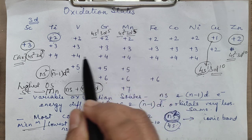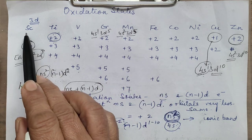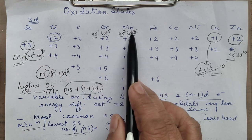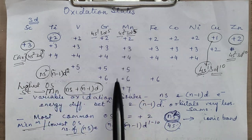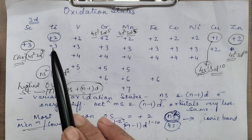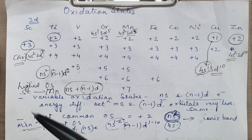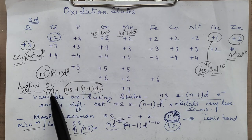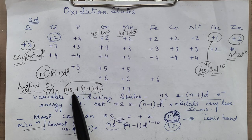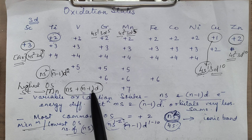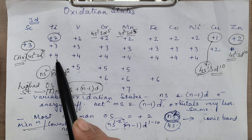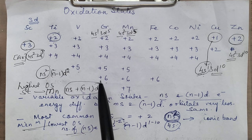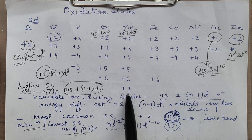From scandium to Mn, the most common oxidation state is +2, and the highest is the sum of number of electrons in Ns and N-1D — giving 4, 5, 6, 7 respectively.